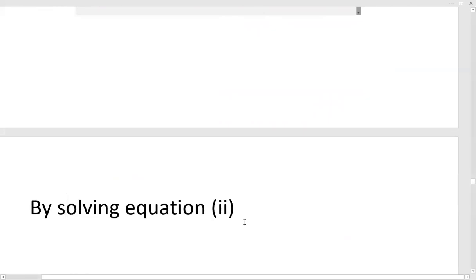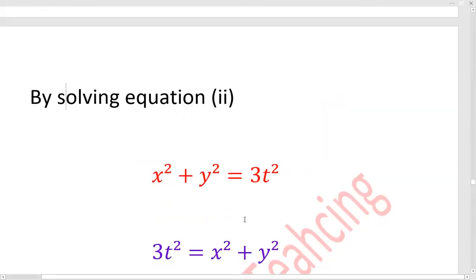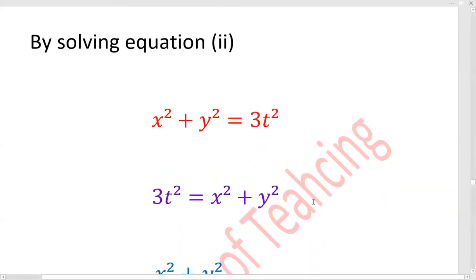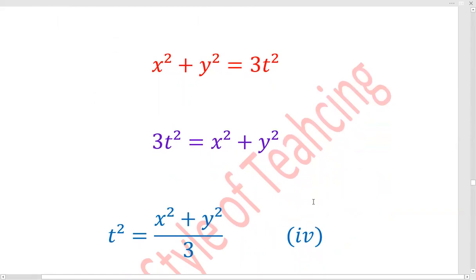By solving equation number two, x square plus y square is equal to 3t square, we will get t square is equal to x square plus y square divided by 3.